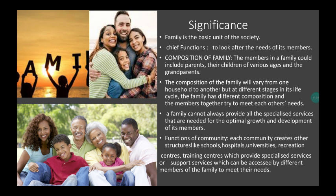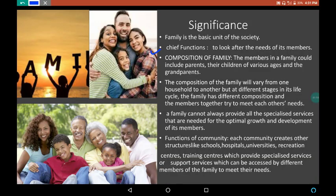Just take a look at the significance. Family is the basic unit of the society. We all know that human is a social animal and we can't live without family and society. The chief functions of any family are to look after the needs of its members. The members in the family could include parents, their children of various ages and the grandparents. The composition of family will vary from one household to another, and at different stages in its life cycle the family has different composition, and the members together try to meet each other's needs.